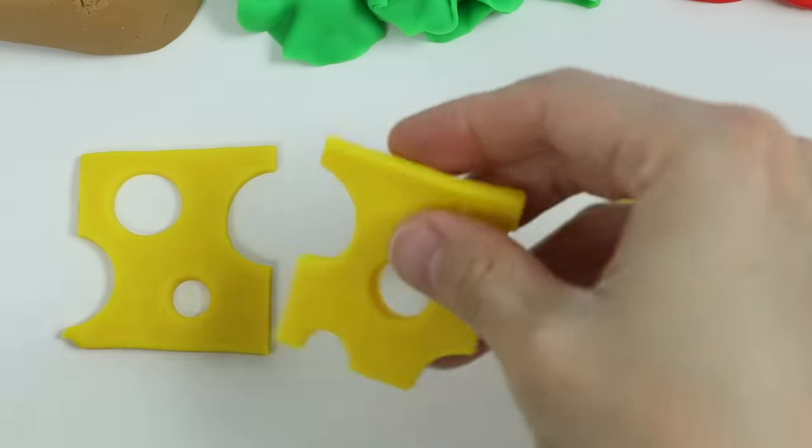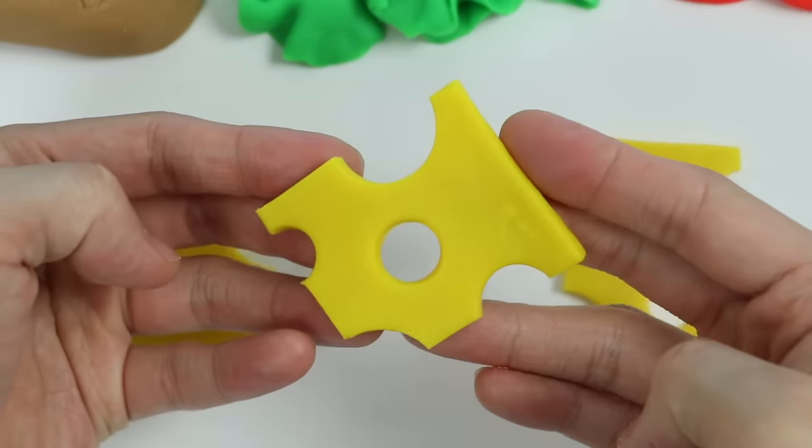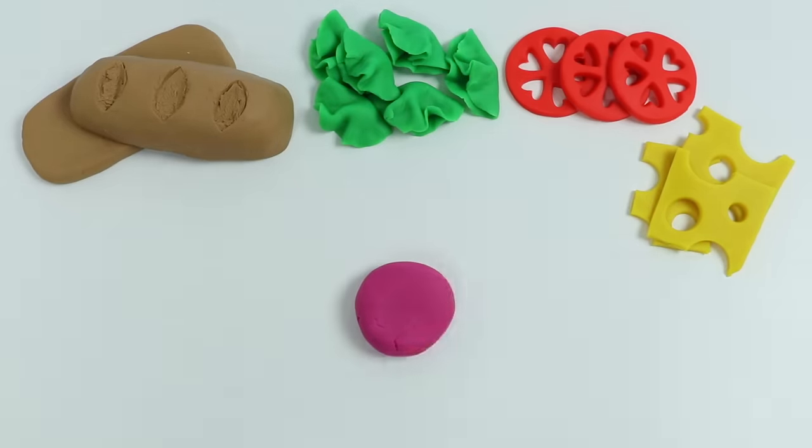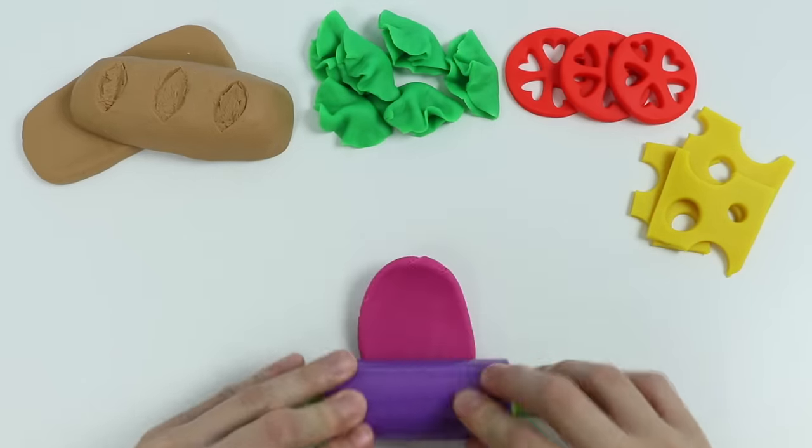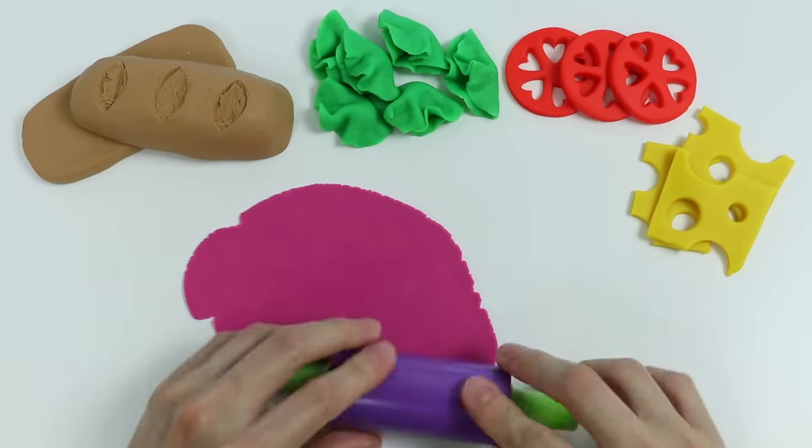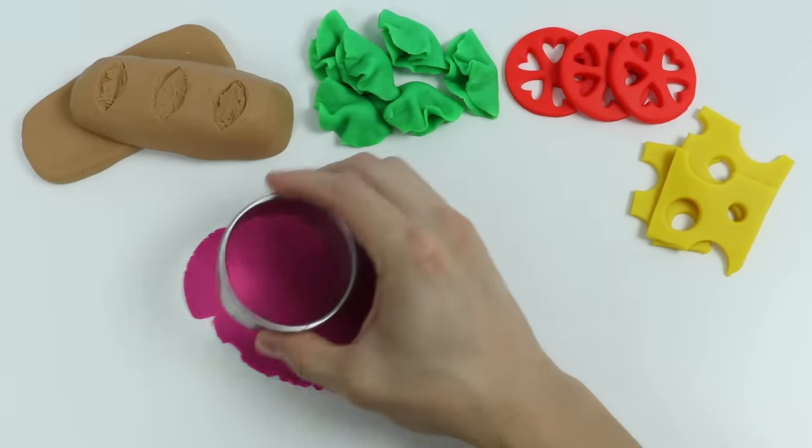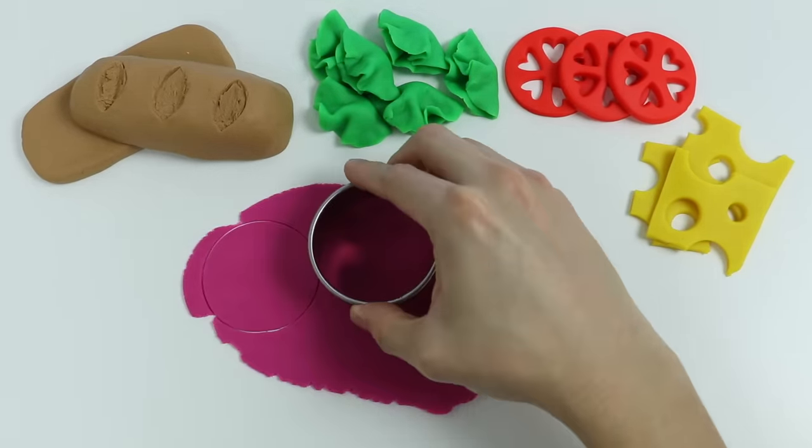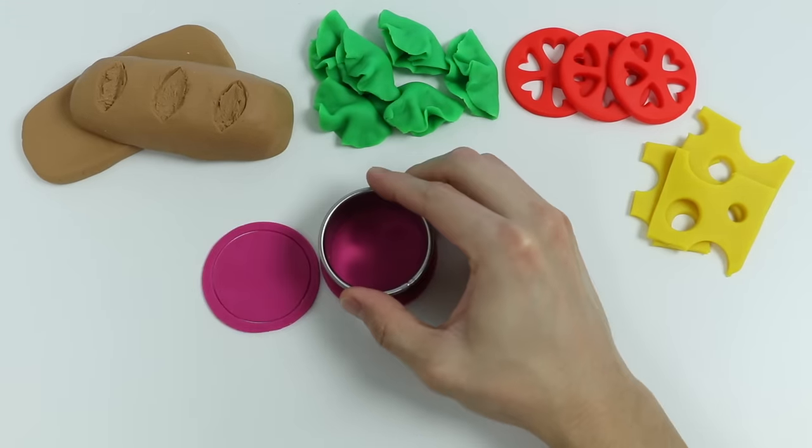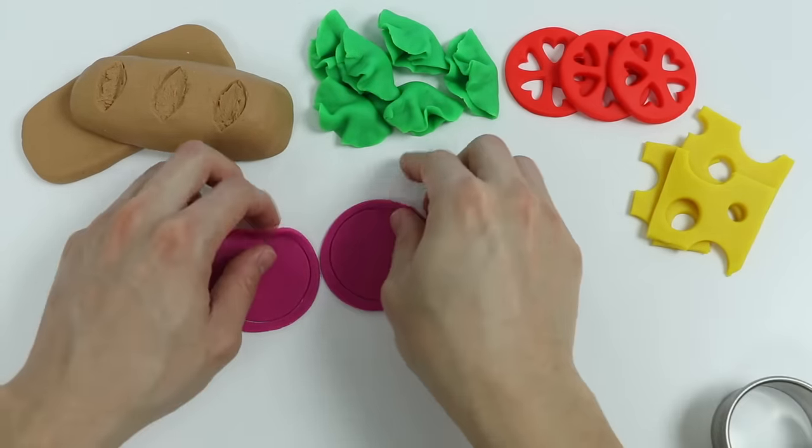Okay, now let's roll out some purple Play-Doh. Now let's use this giant circle cutter. Now we'll use a smaller cutter. Grab the outer rings and we have a couple of red onion slices.